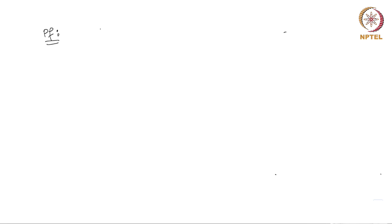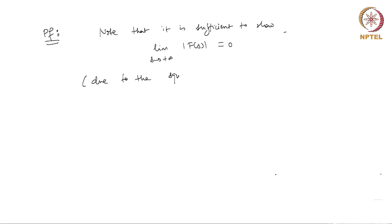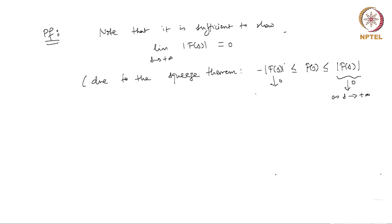Let us see a proof for this statement. It is sufficient to show that the limit as s goes to plus infinity of the modulus of F(s) is equal to 0. This is due to the squeeze theorem for limits: we have minus |F(s)| ≤ F(s) ≤ |F(s)|, and so if the limit of |F(s)| goes to 0 as s goes to plus infinity, then by the squeeze theorem the middle term also goes to 0.